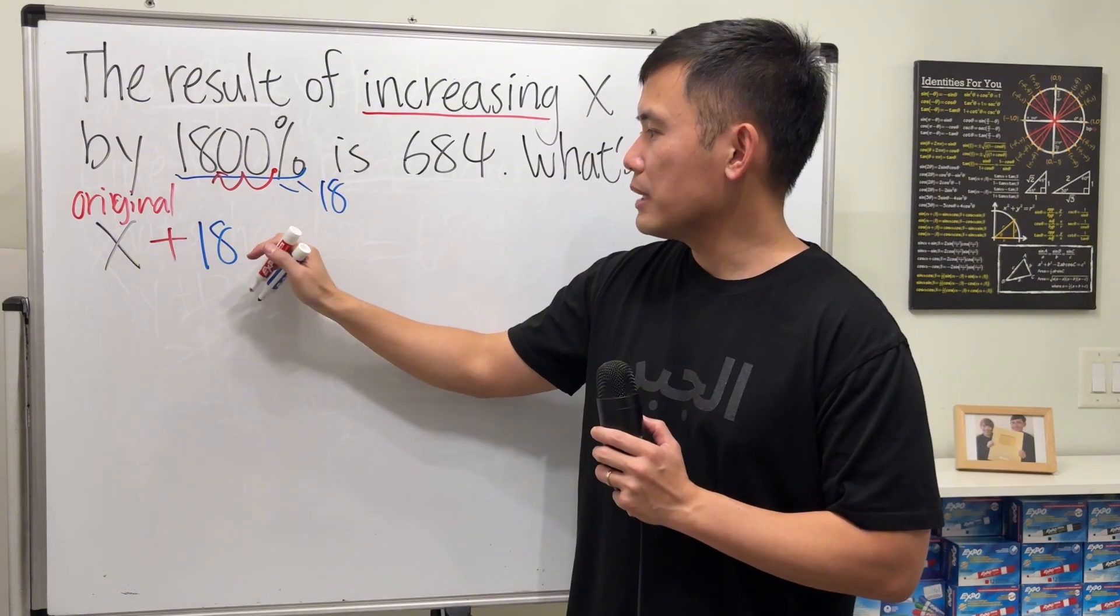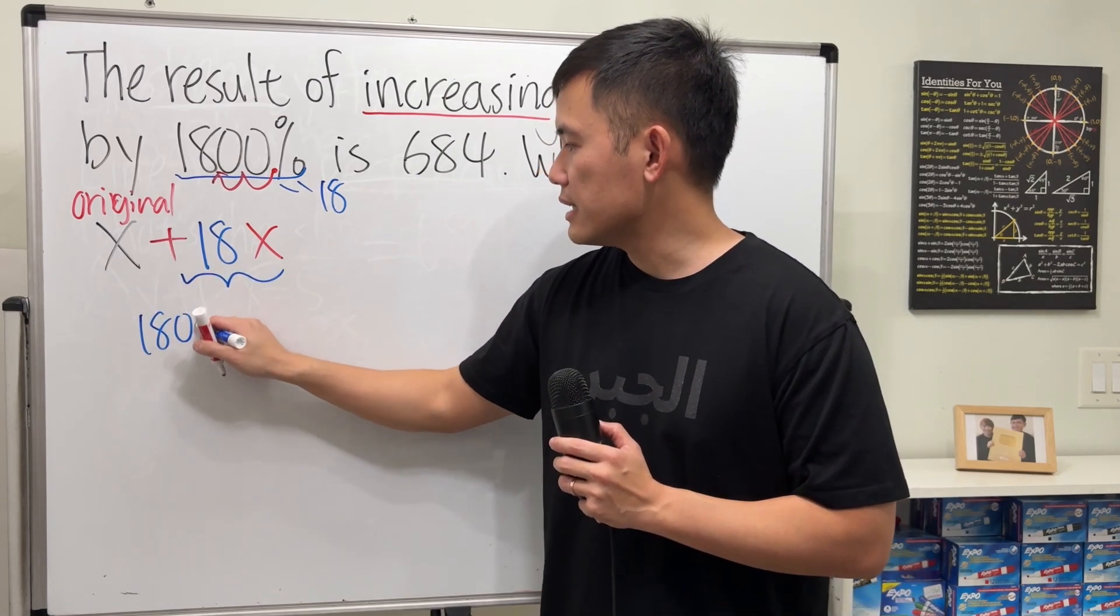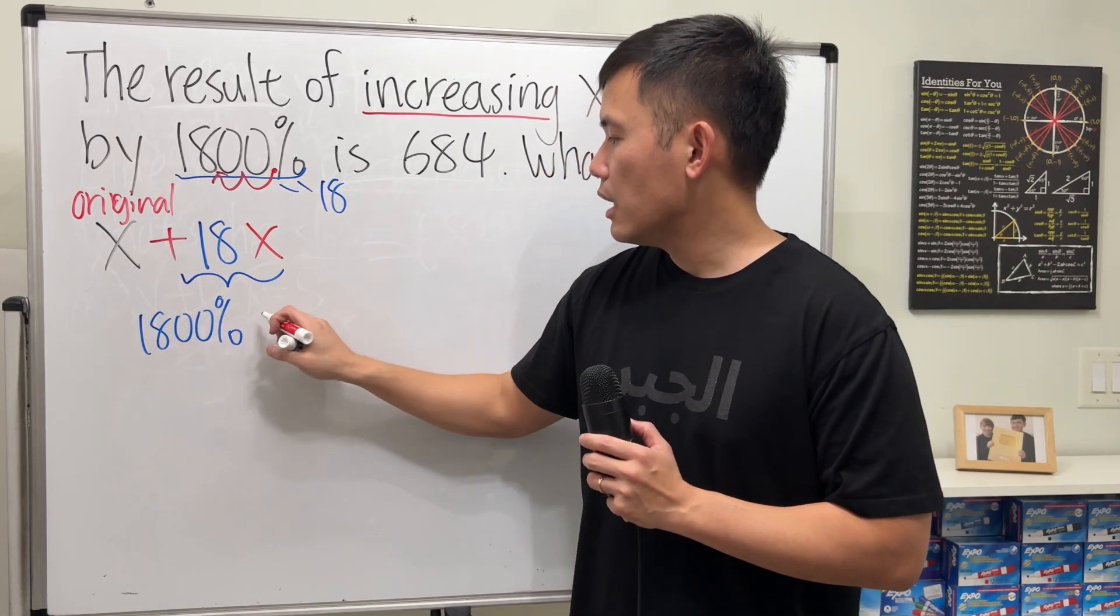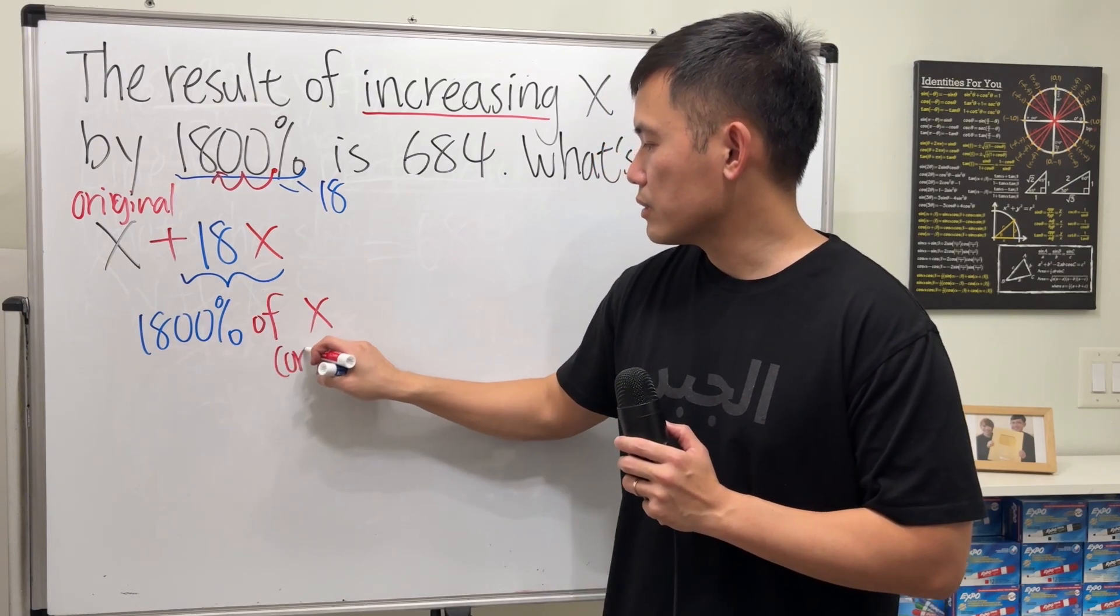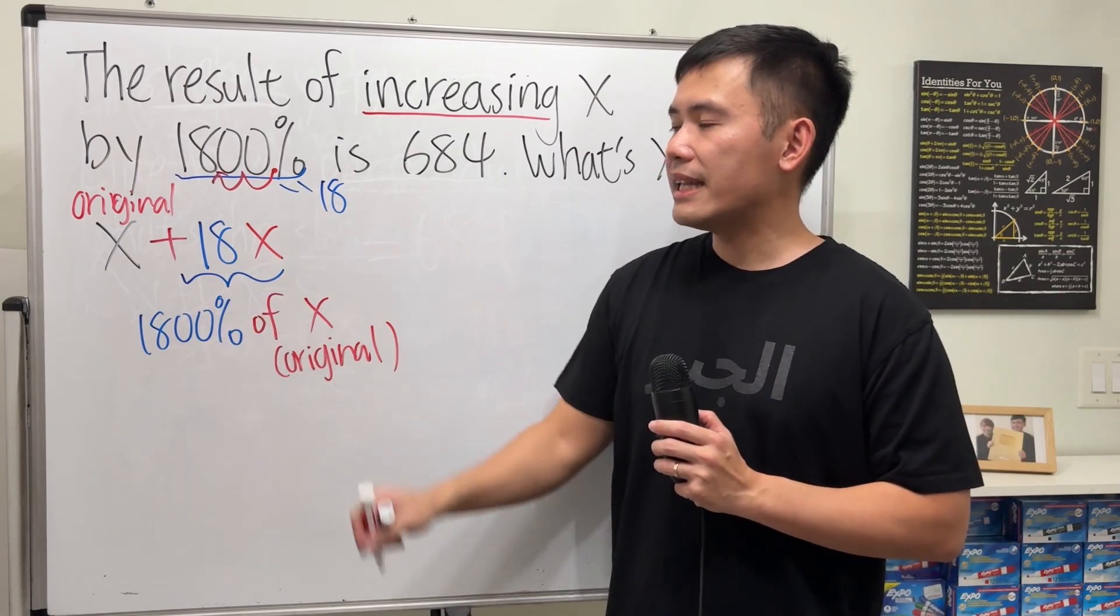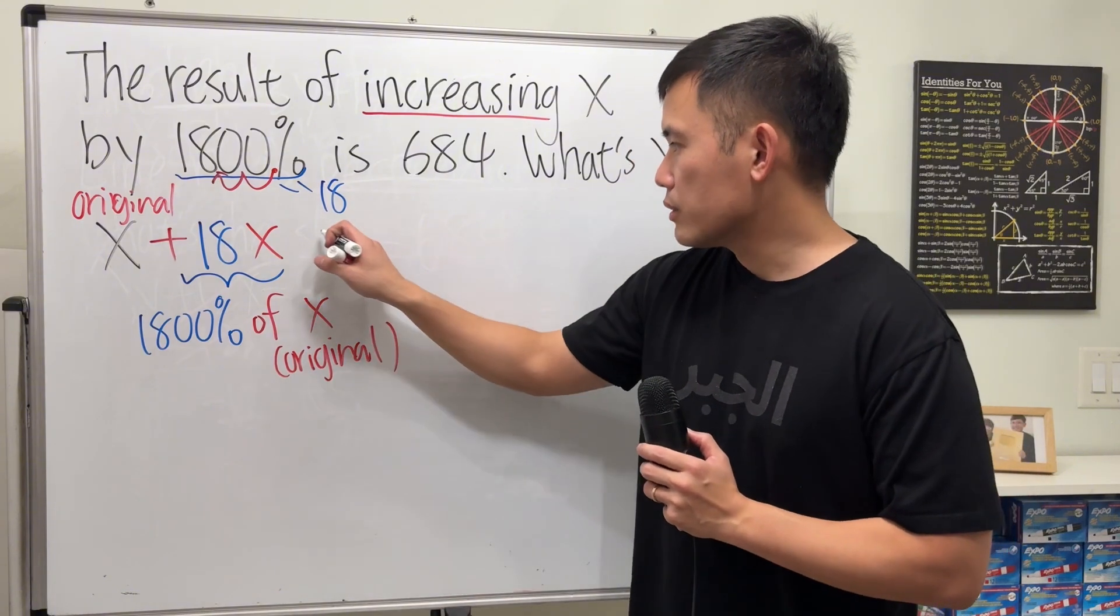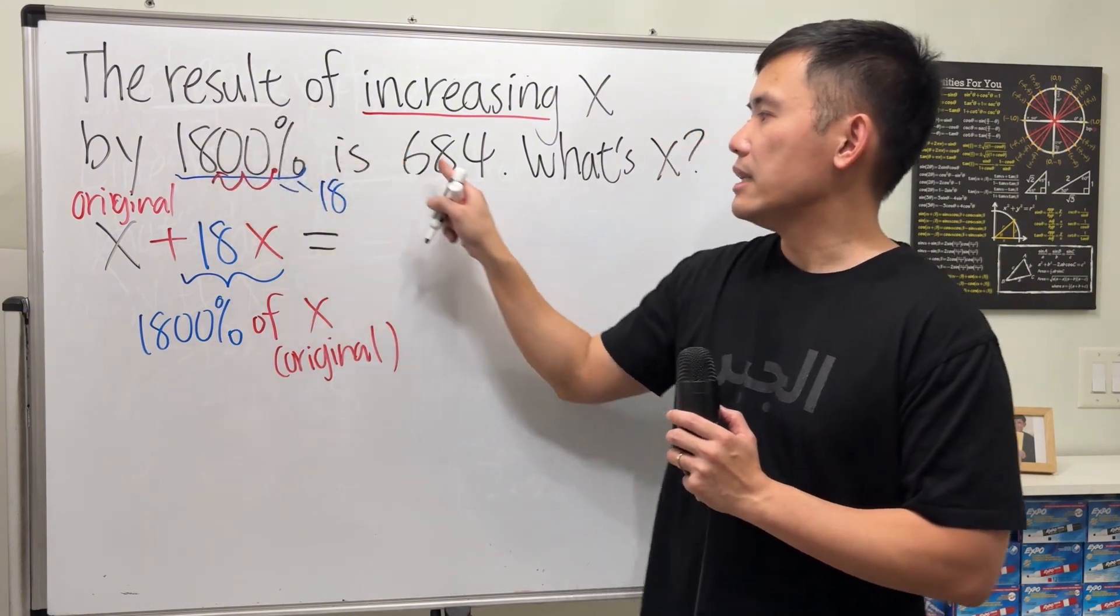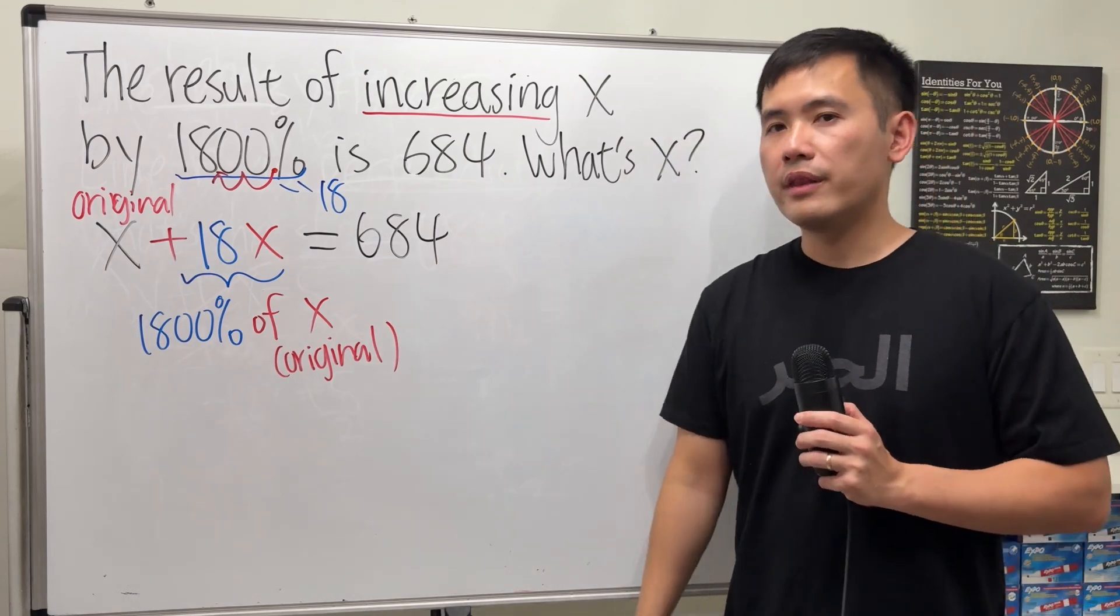So we will have to multiply that by x. This right here means 1800% of x, which is the original. So that's why we add the 18x. And then, the result is 684. And that's the equation that we have to solve.